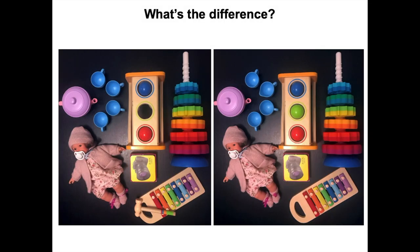Top-down modulation of visual processing can powerfully impact what we see. For example, at first glance these two pictures look very similar, and it's hard to see the differences. But once our attention is directed to each location, the difference becomes quite obvious.